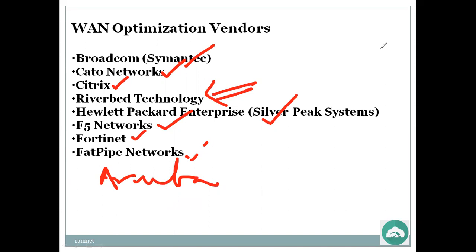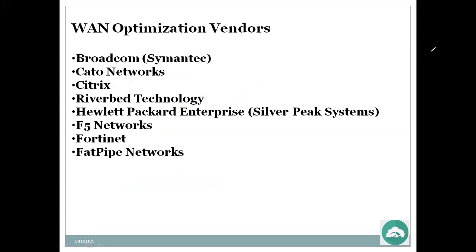Actually, the router itself can do optimizations when it has a WAN optimization module. F5 load balancer is placed behind the routers, similar to a firewall position. Nowadays routers come with WAN optimizer modules built in, so the router itself faces the internet and does WAN optimization. Let's go ahead and look at the products one by one.